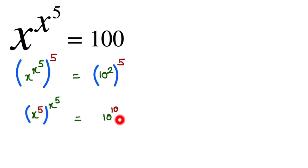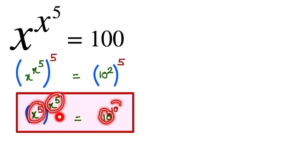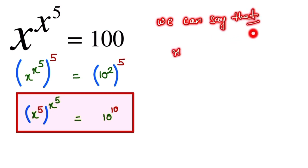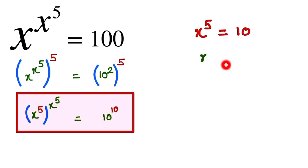This is equal to 10 to the power 10. Now we notice in this equation that x to the power 5 on the left matches x to the power 5, and here we have 10 and 10. So we can say that x to the power 5 is equal to 10. Here x to the power 5 equals 10, so x is equal to the fifth root of 10.